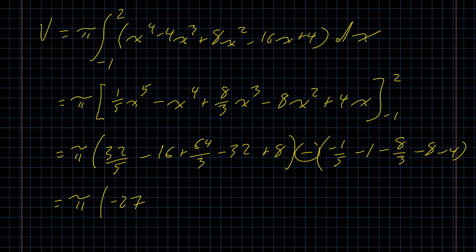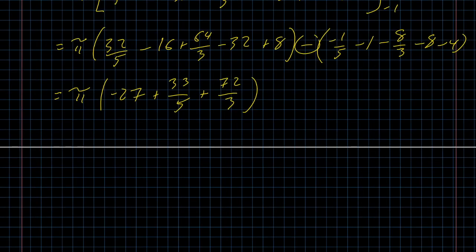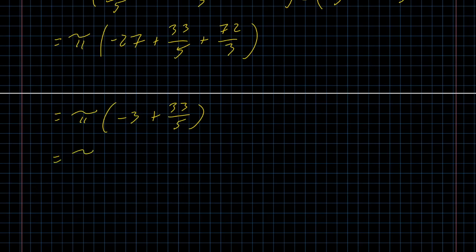I've got 32 over 5, plus 1 fifth. That's 33 over 5. I've got 64 over 3, minus negative 8 thirds. That's plus 72 over 3. And hey, at least that's one thing going for us. 72 divided by 3 is 24. So we've got 24 minus 27, which is negative 3. Negative 3 plus 33 over 5 is the same thing as negative 15 plus 33 over 5. So I come up with pi times 18 over 5.